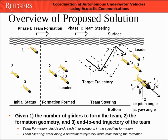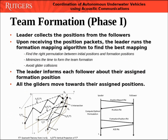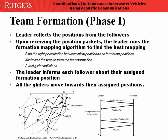In this way, we can use the latest GPS information to correct the coordination errors. Our solution controls the pitch angle alpha and yaw angle beta to steer each glider and keep the formation. In the beginning of the team formation, the leader runs the formation mapping algorithm to find the best matching between the initial positions and formation positions. Our team formation algorithm minimizes the time to form the team formation while avoiding glider collisions. All the gliders then move toward their positions assigned by the leader.